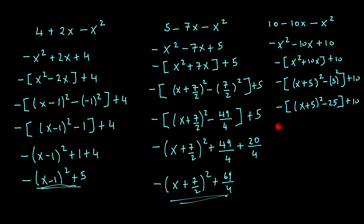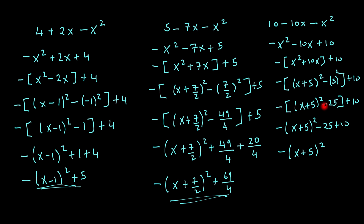Now what I do is bring my negative sign in, multiply everything by minus 1 — in other words, this minus here. So that would be x plus 5 all squared minus 25 plus 10. So that will simply give me minus bracket x plus 5 all squared. That should be a plus here, so that would be plus 35. And that would be my final answer.